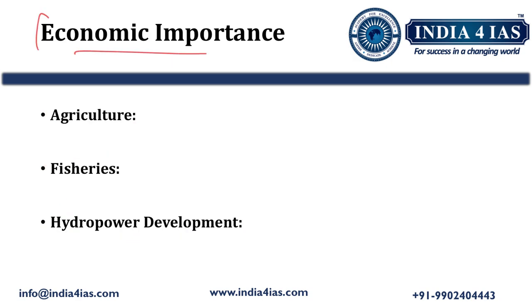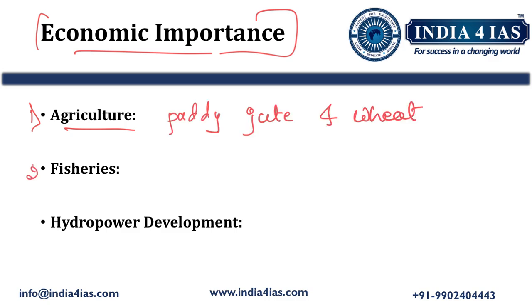Coming to the economic importance: the Teesta River is agriculturally very important as it is a vital source for irrigation, especially in the plains of West Bengal and Bangladesh, where it helps cultivate crops like paddy, jute, and wheat. The river is also a vital source for local fisheries and supports the livelihoods of communities along its banks who are dependent on fishing.